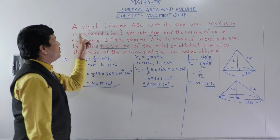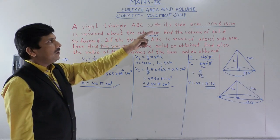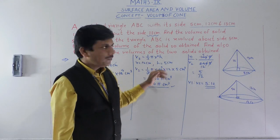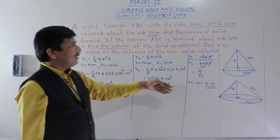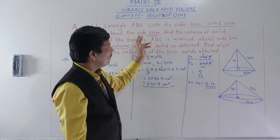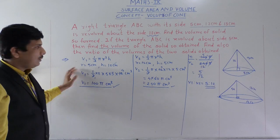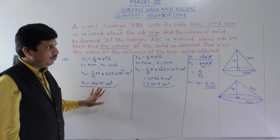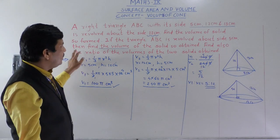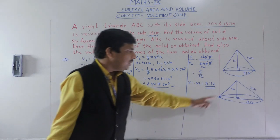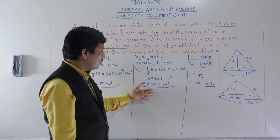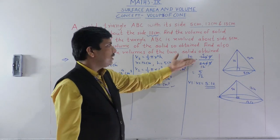To recap: the question gave a right triangle ABC with sides 5 cm, 12 cm, 13 cm — a Pythagorean triplet — which we must recognize while reading to save time. Revolved about 12 cm, the height is 12 cm and we easily find V1 using (1/3)πr²h. Revolved about 5 cm, radius is 12 cm and height is 5 cm, giving V2. The ratio V1 : V2 = 5 : 12.